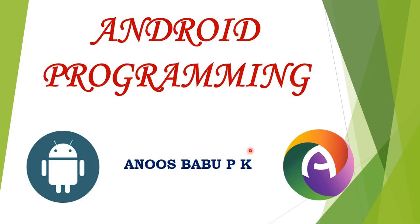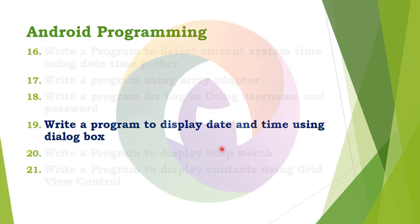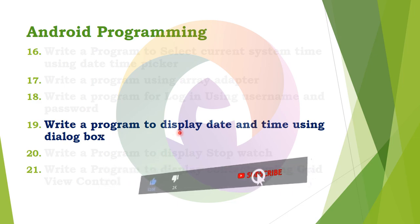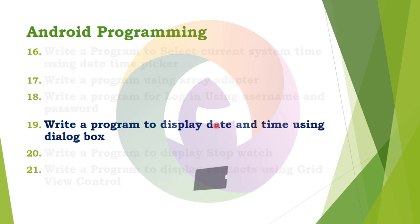Android Programming. Dear students, we are going to discuss the practical program. Write a program to display date and time using a dialog box. You can open the dialog box, write a button, click the dialog box, and print the date and time using the dialog box.